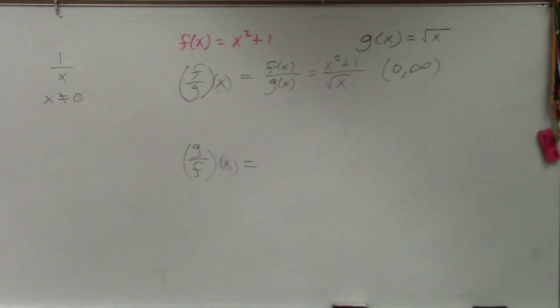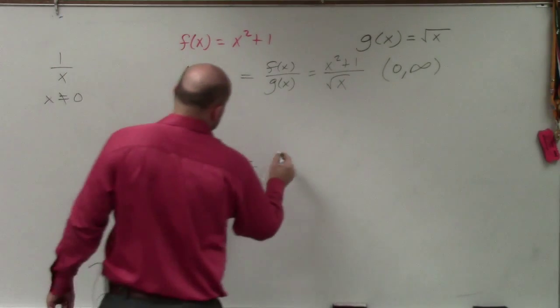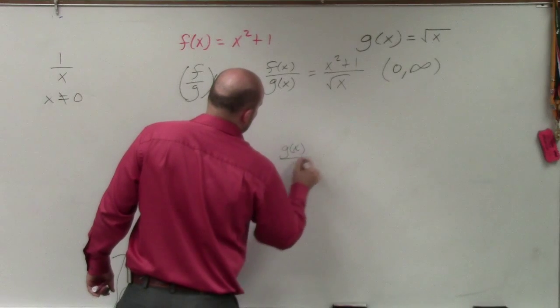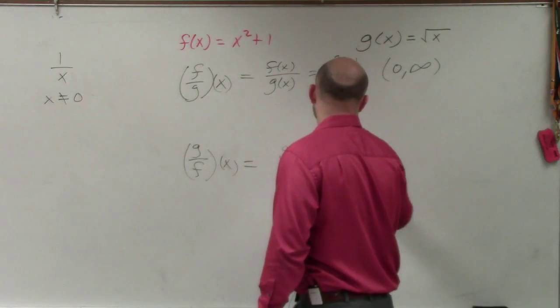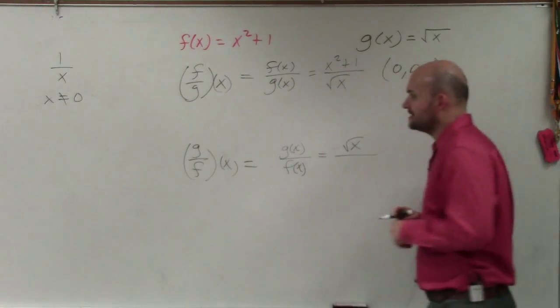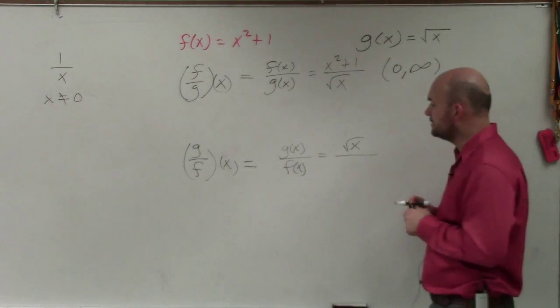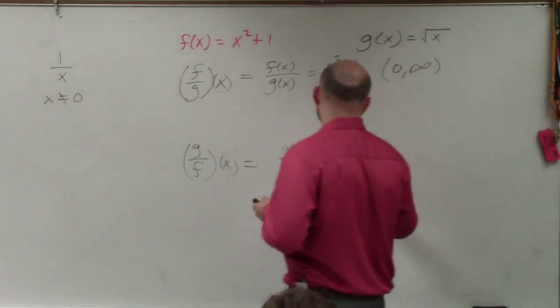So the next one, we're going to take g of x over f of x. So g of x is the square root of x, and f of x is going to be x squared plus 1.